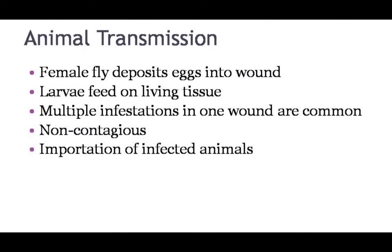Transmission occurs when a female fly deposits eggs in a superficial wound. One female can lay up to 400 eggs at a time. After hatching, the larvae burrow into the flesh and feed on living tissues — they do not feed on dead tissues. After several days, they drop into the ground to pupate. The adult skewworms emerge and are ready to mate within 3-5 days, beginning the cycle again. Infected wounds attract other female flies and multiple infestations often occur. It is not contagious between animals.